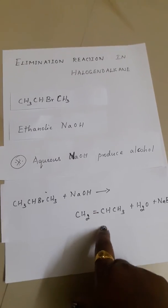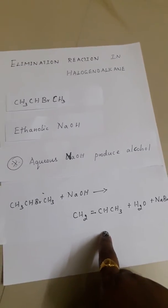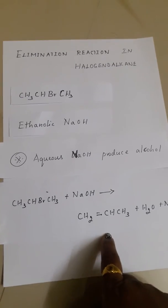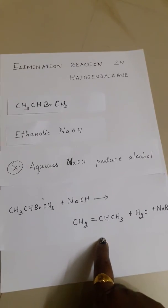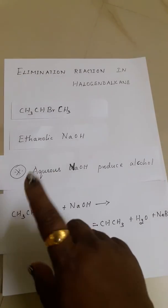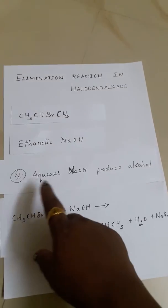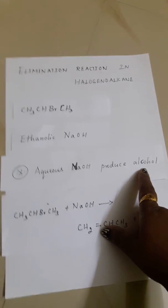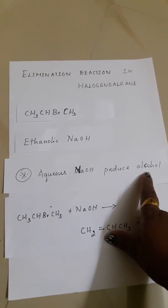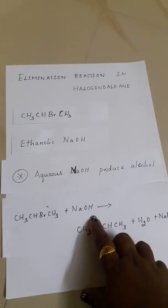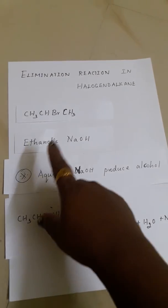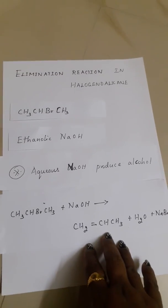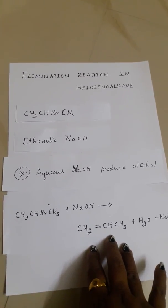So to summarize: in elimination reactions, when you add ethanolic NaOH to a halogeanoalkane, you get an alkene as the product, not alcohol. If you use aqueous NaOH — NaOH with water — it produces alcohol through substitution. But ethanolic NaOH gives you an alkene through elimination. Thank you so much for watching this video.